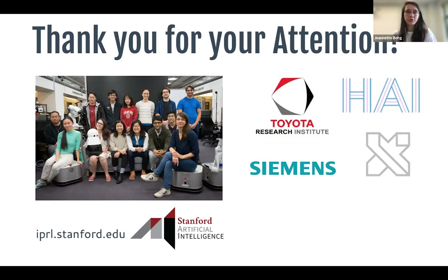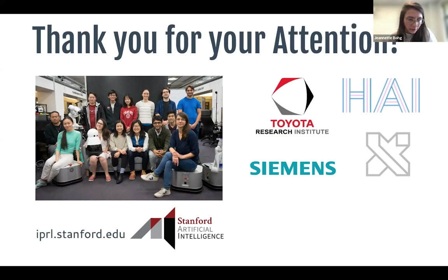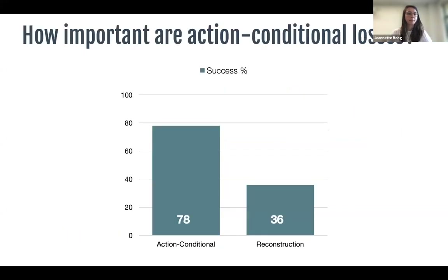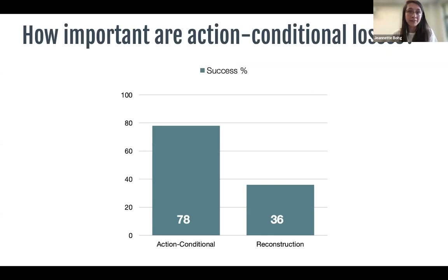Self-supervised objectives are useful because you don't need labeled training data — that saves a lot of work. We did compare to other losses. The most well-known is unsupervised reconstruction, where you just reconstruct the output. With only reconstruction, the success rate is really low — just 36% — compared to 78% when using our action-conditional losses. That's what we found.